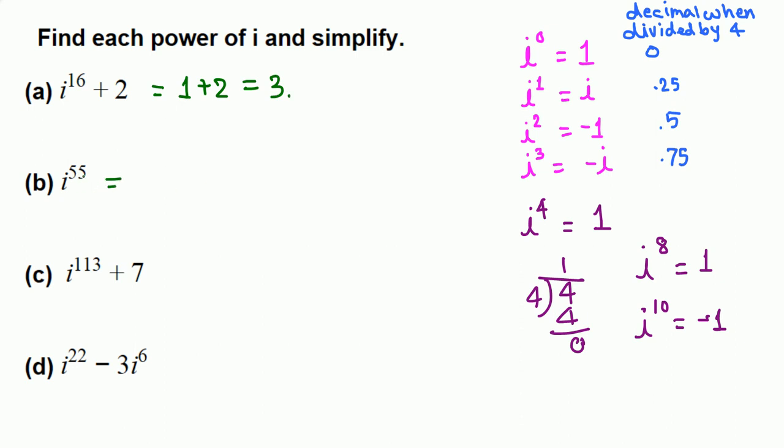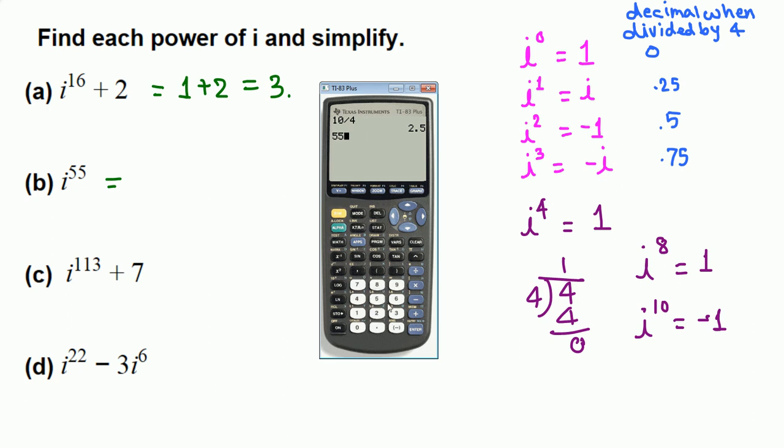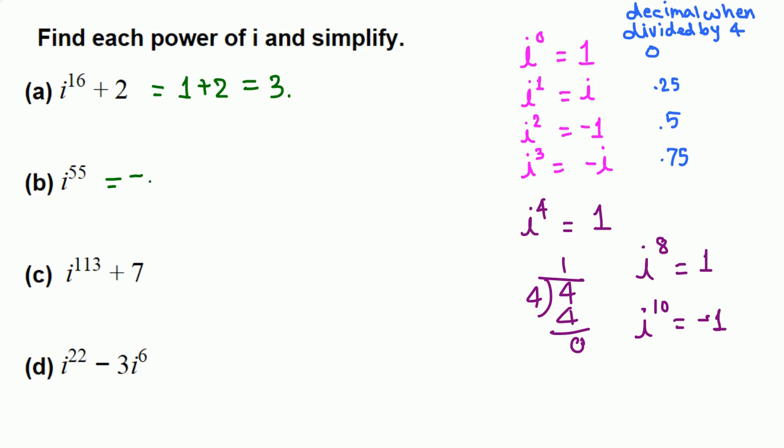Next, i raised to 55. Let's divide 55 by 4. When we divide 55 by 4, we get 13.75. The 0.75 means remainder 3, so the third power, which is negative i. For i^55, we divided 55 by 4 and got decimal 0.75. Just look at the decimal—0.75 corresponds to negative i.